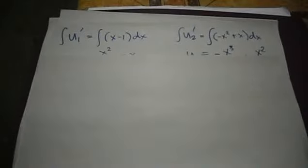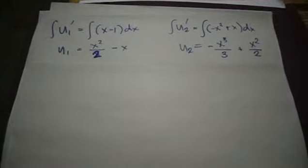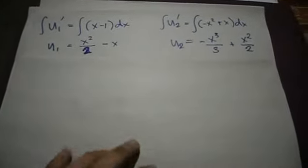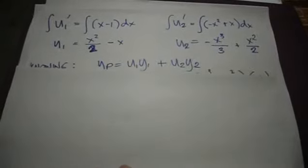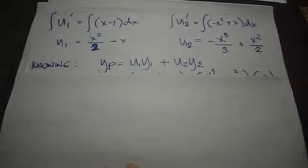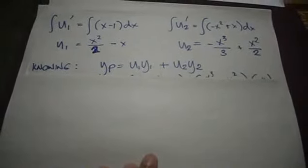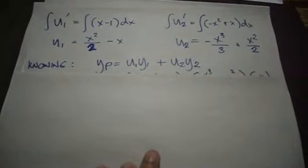It's known that yp is equal to u1*y1 + u2*y2. Substituting our u1, u2, and y1, y2, we get the yp. So this is now our yp.